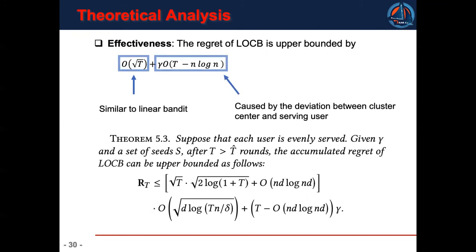The third theorem is about effectiveness of the recommendation. The regret of LOCB is upper-bounded by this term. It has two parts. The first part is proportional to the square root of t, which is similar to the complexity in linear bandit. The second part is caused by the deviation between the cluster center and the serving user.